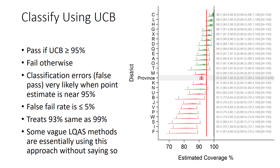This next rule is the complement to that, and it's also lopsided. Here we say we're going to use the upper confidence bound for classifying. If the upper confidence bound is below the threshold, then we're going to fail the stratum and color it red. Otherwise, we're going to pass it and color it green.